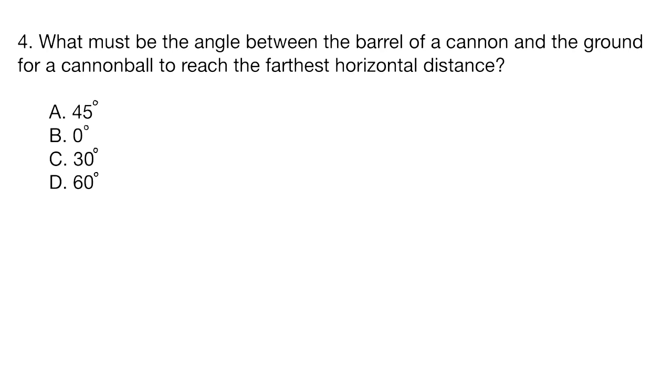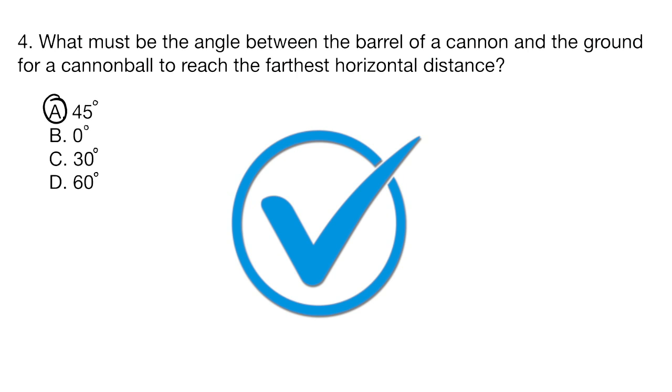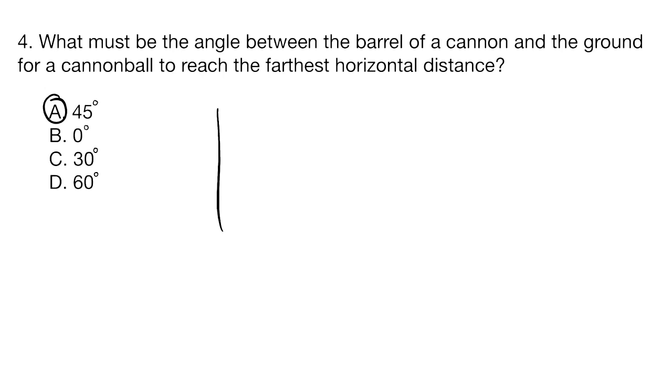The correct answer here is going to be option A, 45 degrees. 45 degrees is the halfway point between a 90 degree angle, and so 45 is the best because it gives us equal parts of the vertical component and the horizontal component. That is going to allow us to get the farthest horizontal distance. Anything below 45 degrees, that projectile is going to come up a little bit short. Anything above 45 degrees, that projectile is going to go higher than far. So 45 degrees is going to give us the furthest distance.